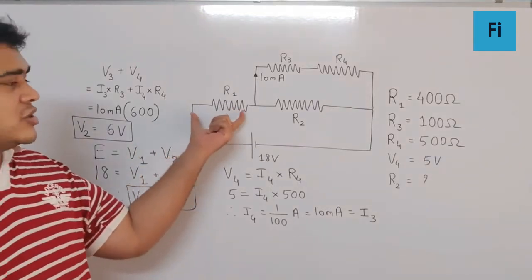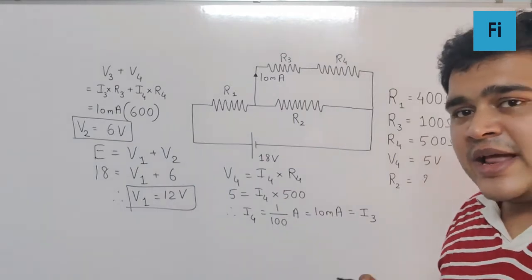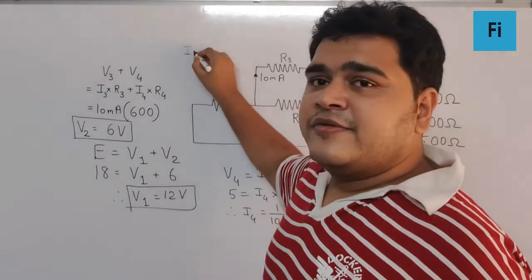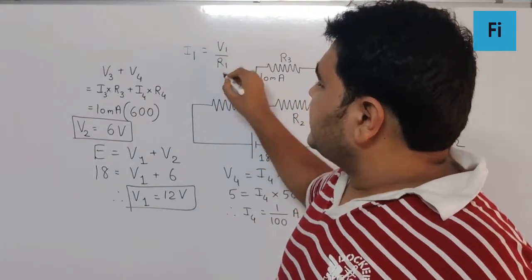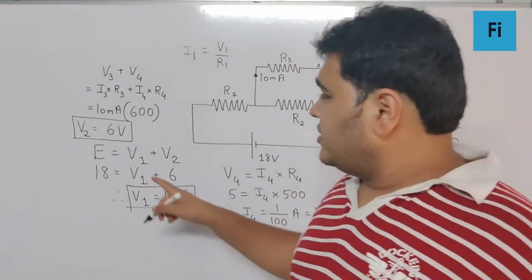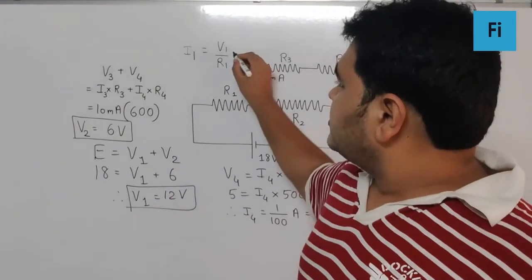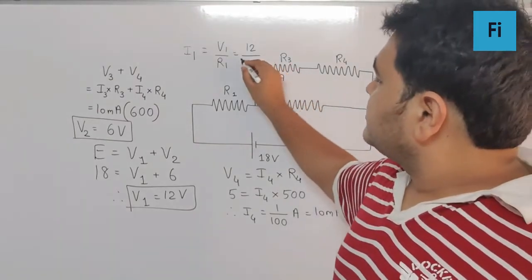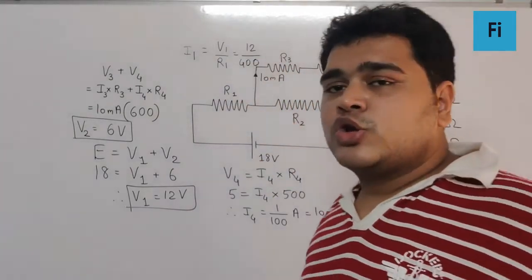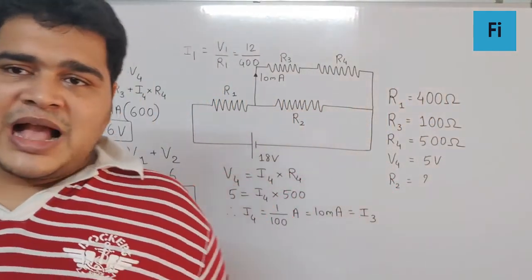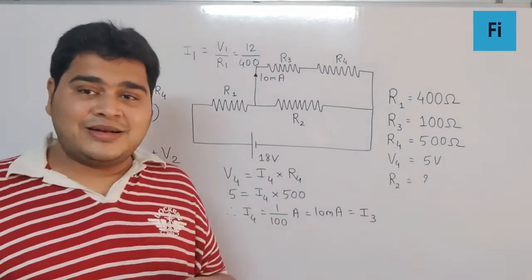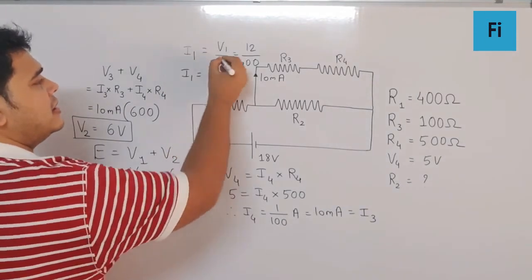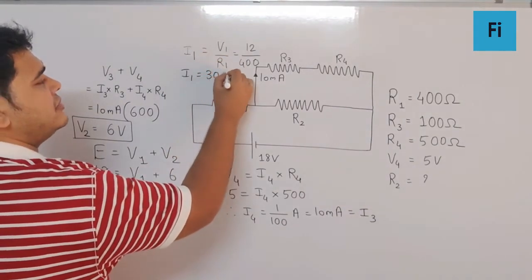So the voltage across R1 is already known now. Now can I find the current passing through R1 as I1 equals V1 by R1? So V1 we know as 12 volt, and R1 we know as 400 ohm. So 12 by 400 is as good as 3 by 100, and 3 by 100 is nothing but 30 milliampere.